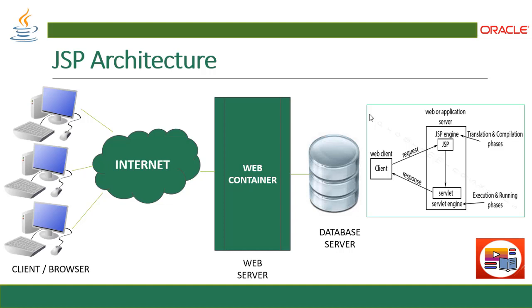JSP architecture contains the same kind of blocks we have learned in the servlet. We have a client, which can be of different operating systems and characteristics. They go through the internet, creating requests and getting responses from the web container. The request goes to the web container where all JSP files and servlet files are stored. If required to contact the database, they use the JDBC API, connect to the database, access the data, and provide the response to the client.